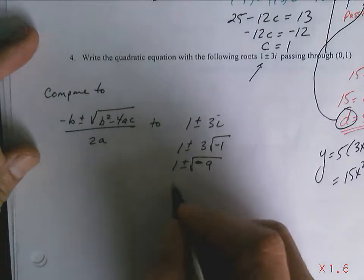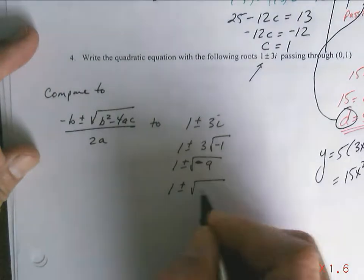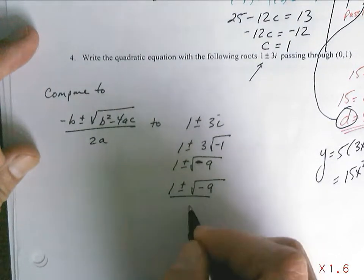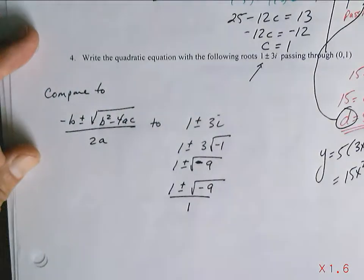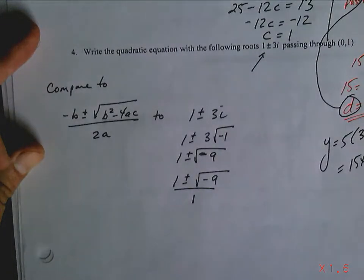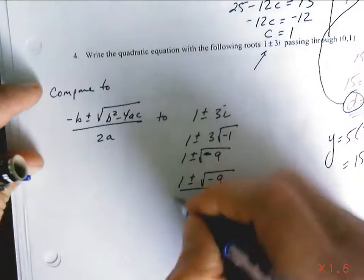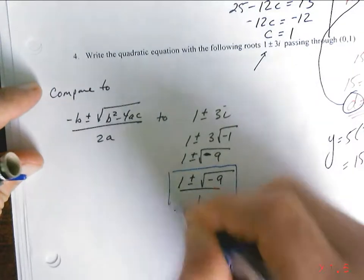And I need a bottom part. So it'll be 1 plus or minus square root negative 9 over top of 1. Now I can compare.